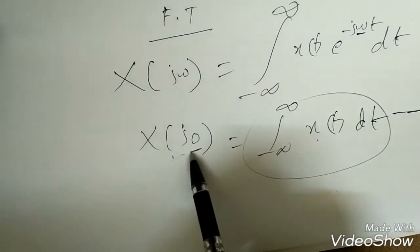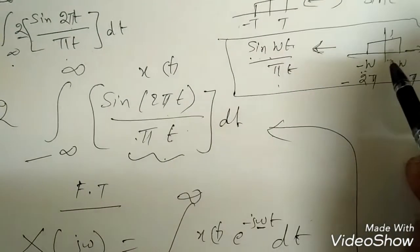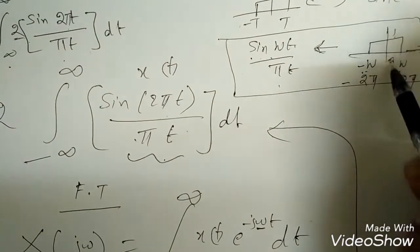Now see, I told you at ω equal to 0 what is the magnitude. What is the ω at ω equal to 0? The magnitude is nothing but 1.